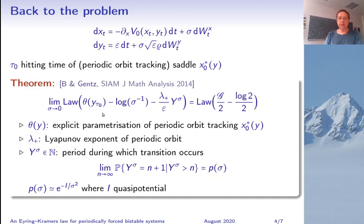Again we have convergence of something to a Gumbel law, and this something is composed of three terms. The first one is the convenient and explicitly known parametrization of the periodic orbit. Then you again have a logarithmic shift, and finally what is new here is that you have a constant times an integer-valued random variable which is asymptotically geometric in the following sense here. The meaning of this variable here is that it tells you which is the period during which you cross some intermediate level between the starting well and the saddle.